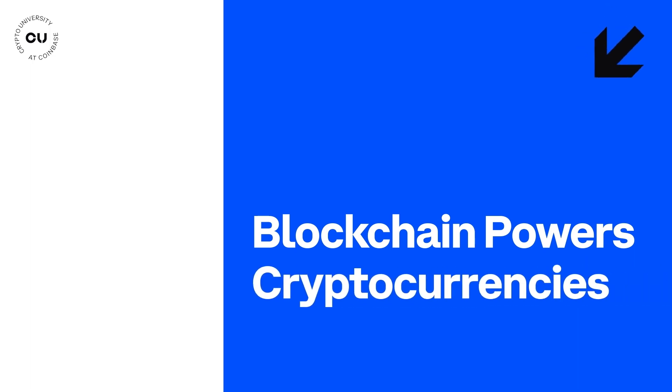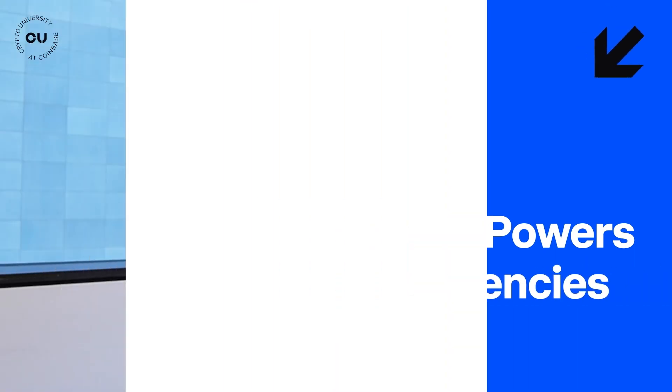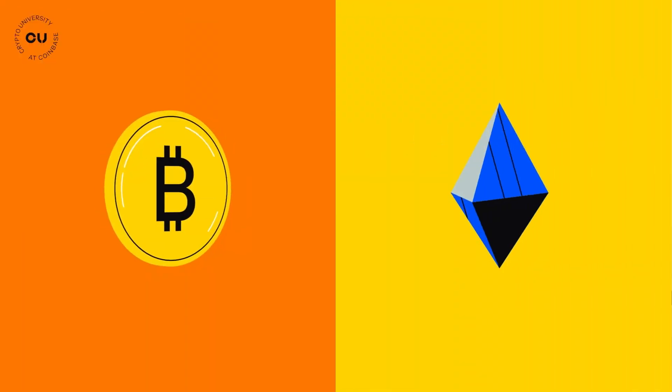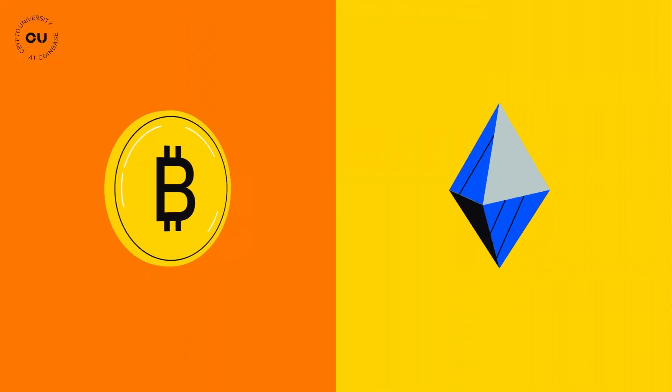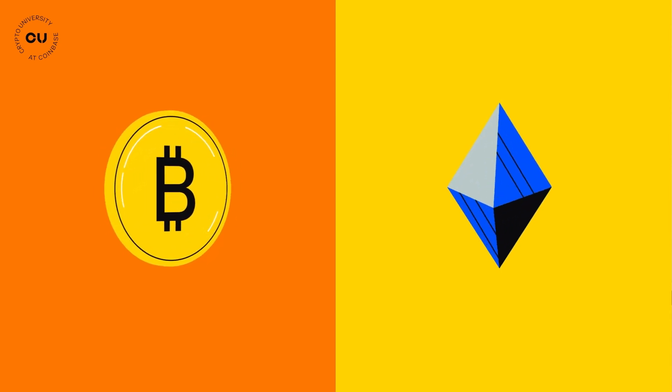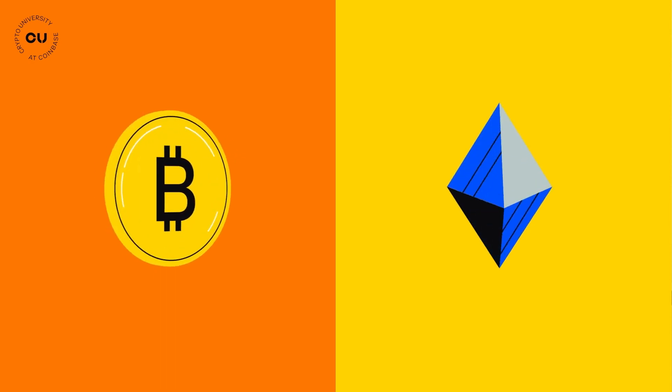Cryptocurrencies are just the asset that is transferred across the blockchain — blockchain powers cryptocurrencies. They enable you to transfer value over the internet without the need for an intermediary or middleman, which would be the equivalent of one person that you have to trust with the ledger. Cryptocurrencies like Bitcoin and Ethereum have grown as digital alternatives to money issued by a government or central authority, which is again essentially just having to trust one entity with the public ledger.